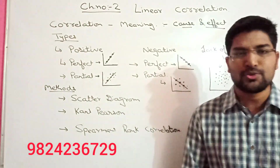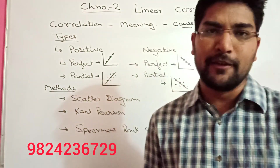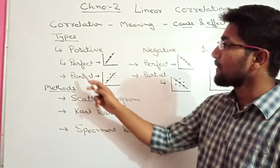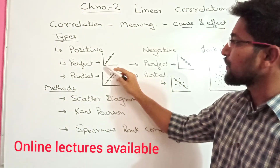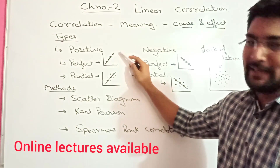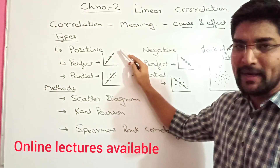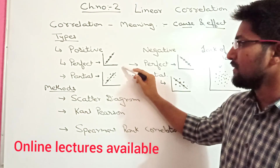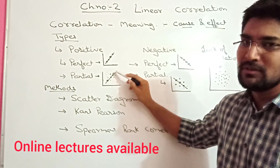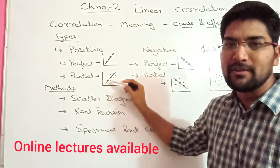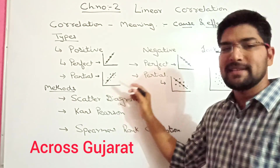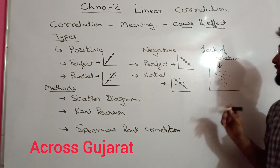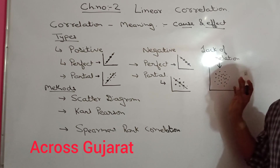Now for the scatter diagrams — if you see on the board, for perfect positive, it is a straight line with all the dots on the line. For partial positive, there is a straight line trend but the points are scattered around the line — some points are on the line and some are around it. The same way for negative correlation. For lack of correlation, everything is scattered with no clear direction.